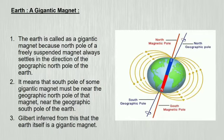The south pole of the magnetic sphere was attracted towards it. The Earth is called a gigantic magnet because the north pole of a freely suspended magnet always settles in the direction of the geographical north pole of the Earth.